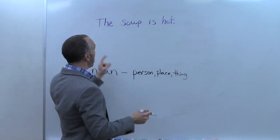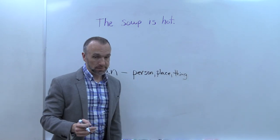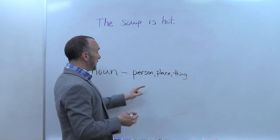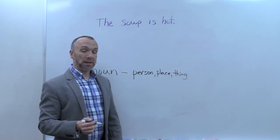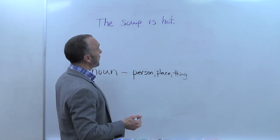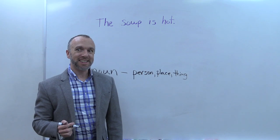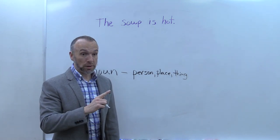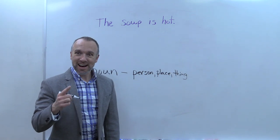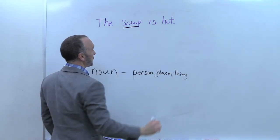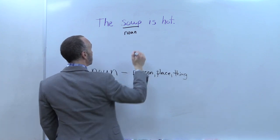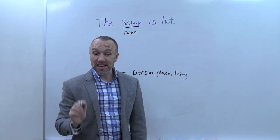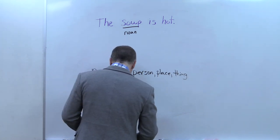Let's read the sentence up here and see if we can find the person, place, or thing. The soup is hot. Do we have a person? No. Do we have a place? No. Do we have a thing? Yes! The soup is the noun in the sentence. Some sentences can have more than one noun.